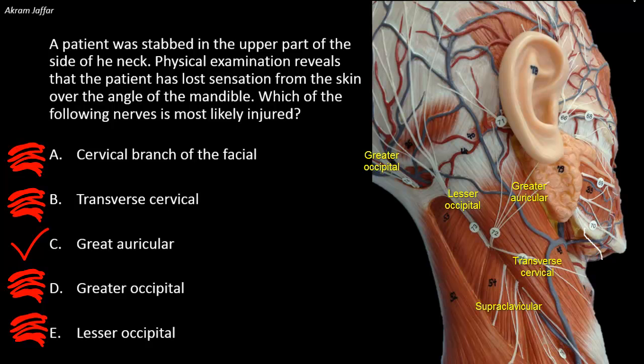You should remember the root values of the supraclavicular nerves — C3 and C4 — as these are the same root values of the phrenic nerve. This will help you remember the origin of referred pain in the tip of the shoulder when structures supplied by the phrenic nerve are irritated.